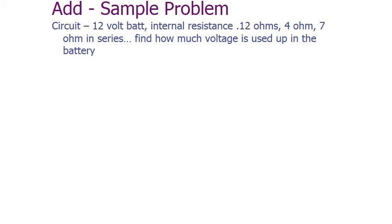Let's try this one. We have a 12-volt battery with internal resistance 0.4 ohms, and then we have a 4-ohm and a 7-ohm in series. Let's draw that out. How much voltage is used up in the battery itself and taken away from the overall amount?